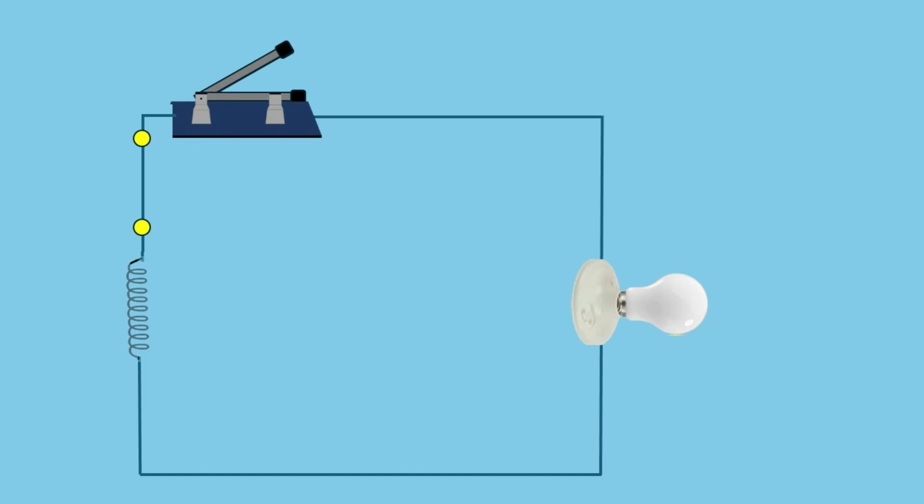Now let's take a look at what happens in an AC circuit with a light bulb. When we close the switch, you'll notice the electricity pulsing back and forth, changing directions 60 times per second. This is alternating current in action.